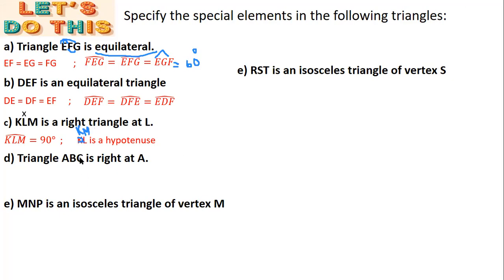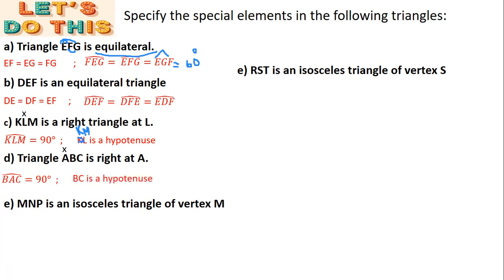Triangle ABC is right at A, so I put an X over A. The angle at vertex A is BAC = 90 degrees, or CAB = 90 degrees. The hypotenuse is BC, since it is opposite to the right angle at A.